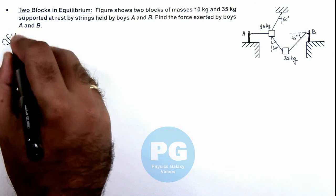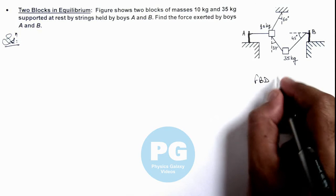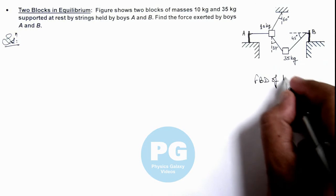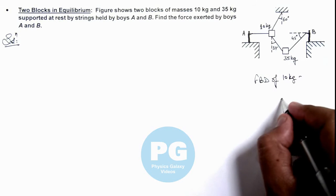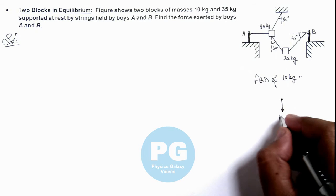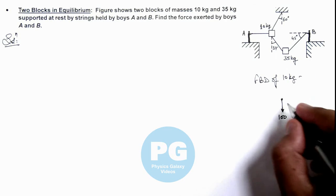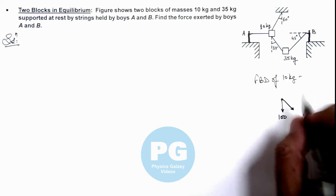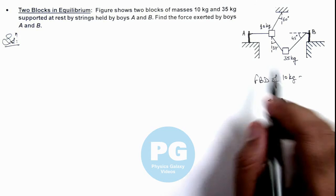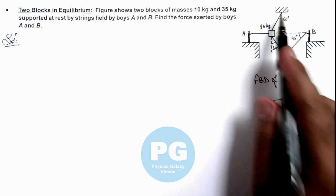To analyze the situation, first we need to draw the free body diagrams of the 10 kg and 35 kg blocks. For the free body diagram of the 10 kg block, we can see it is experiencing its weight downward, that is 10g or 100 newtons, taking g as 10. One tension is acting toward the 35 kg block, one tension is due to the force exerted by the boy, and another tension is acting toward the suspension point.